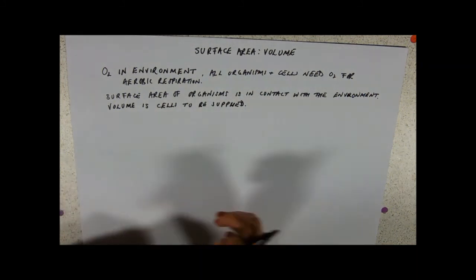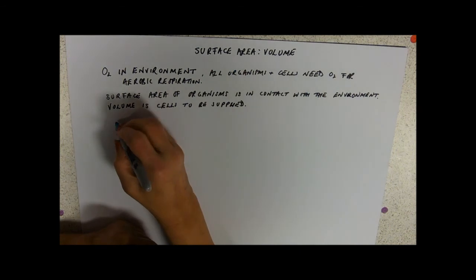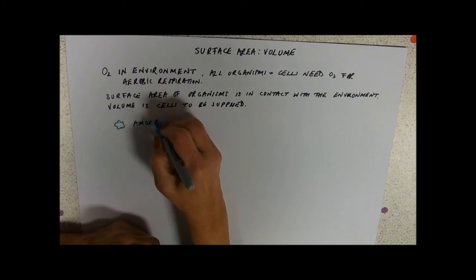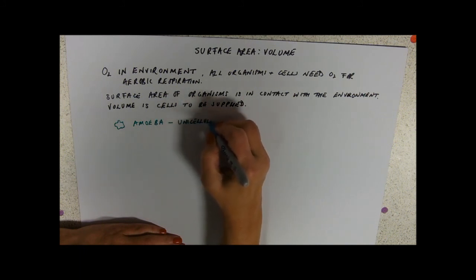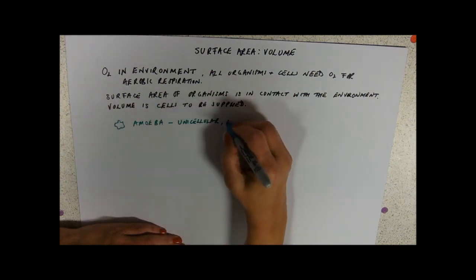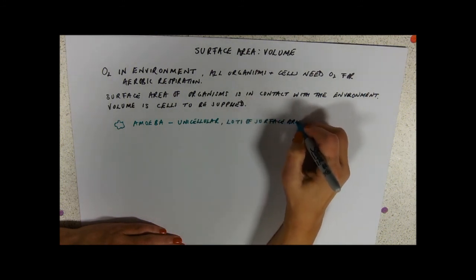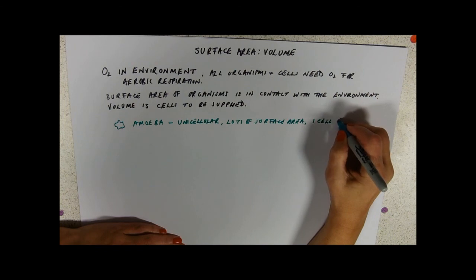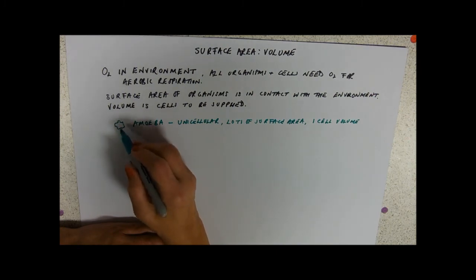So if we think about a little unicellular organism, something like amoeba is unicellular, it's got lots of surface area and one cell's worth of volume. So it's got masses of surface area in relation to its volume.